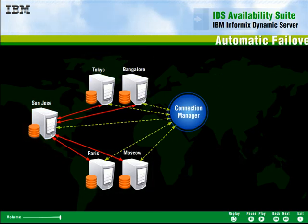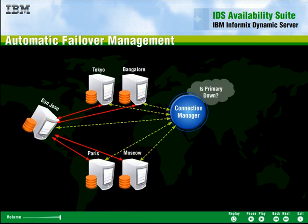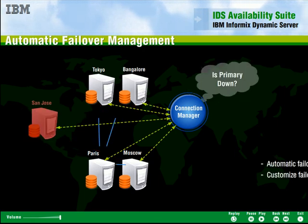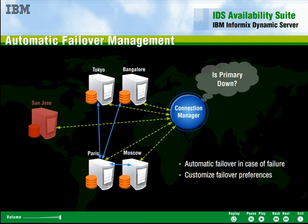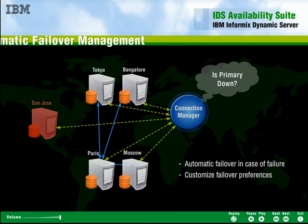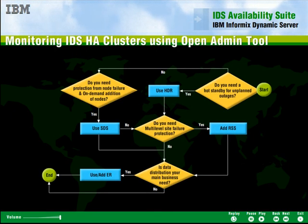The connection manager also handles automatic failover should the primary become unavailable. Failover preferences can easily be defined in a failover plan that details the failover sequence down to the last node. You can create simple or more complex availability strategies.